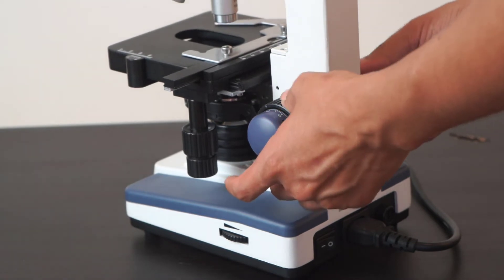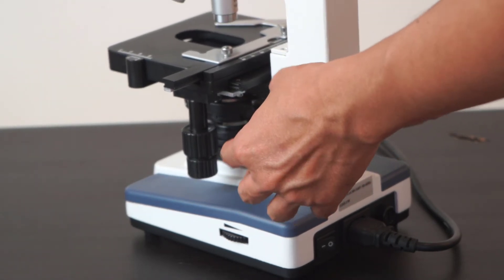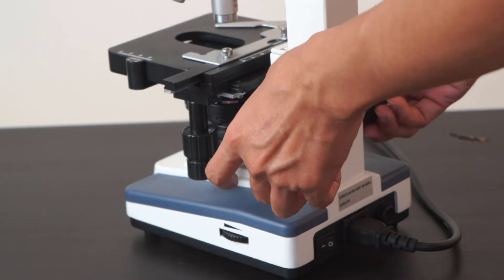To focus the scope, use the coarse knob. For fine focusing adjustment, you can use the fine focusing knob.